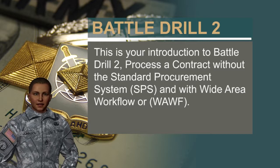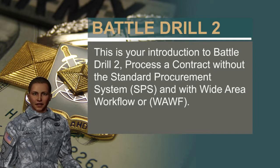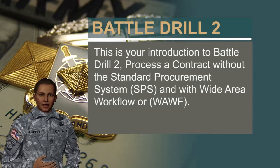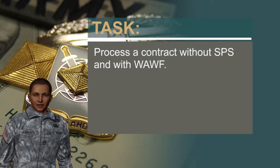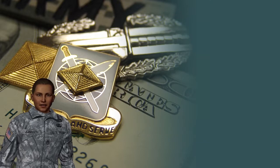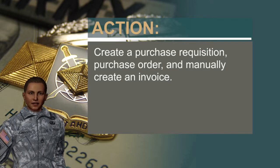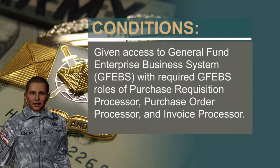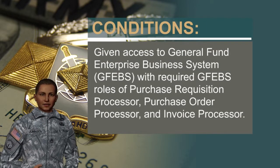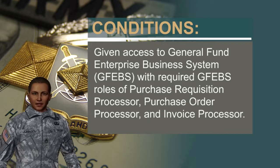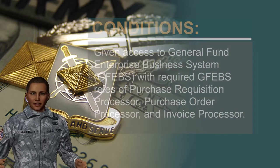This is your introduction to Battle Drill 2: process a contract without the Standard Procurement System and with Wide Area Workflow (WAF) Task; process a contract without SPS and with WAF Action; create a purchase requisition, purchase order, and manually create an invoice. Conditions: given access to General Fund Enterprise Business System with required GFIBS roles of Purchase Requisition Processor, Purchase Order Processor, and Invoice Processor.